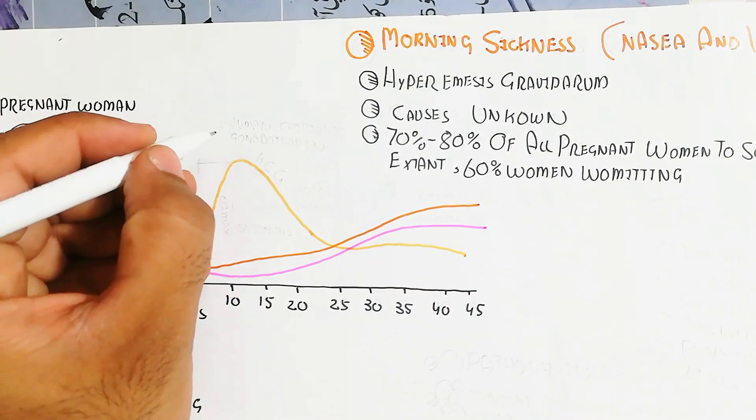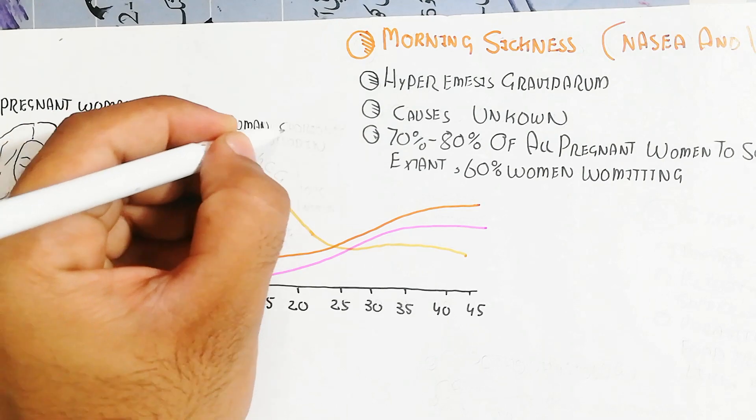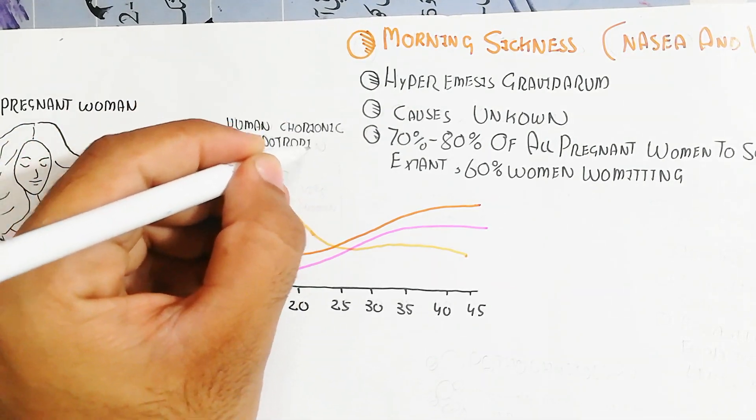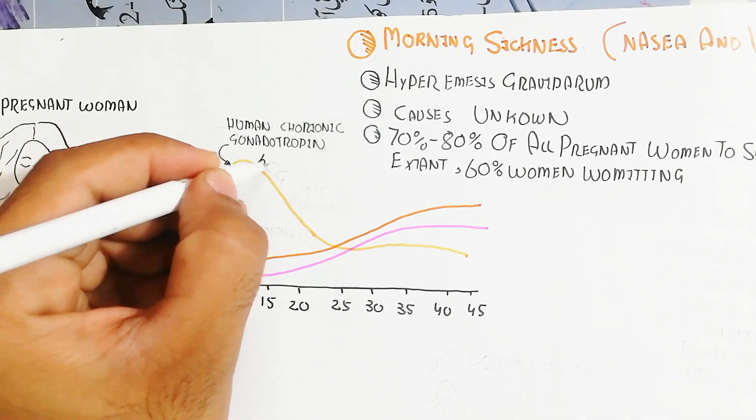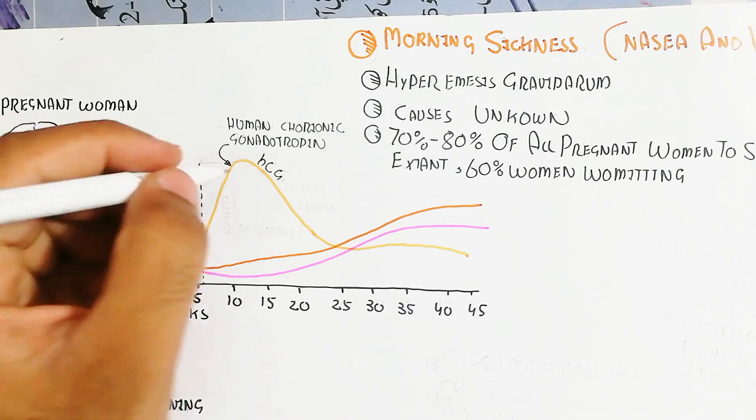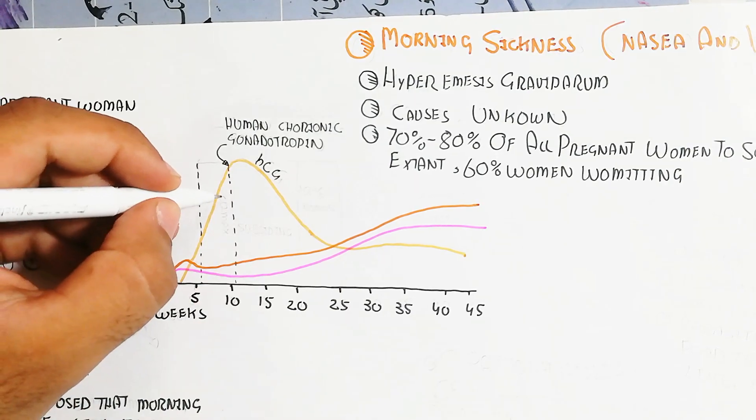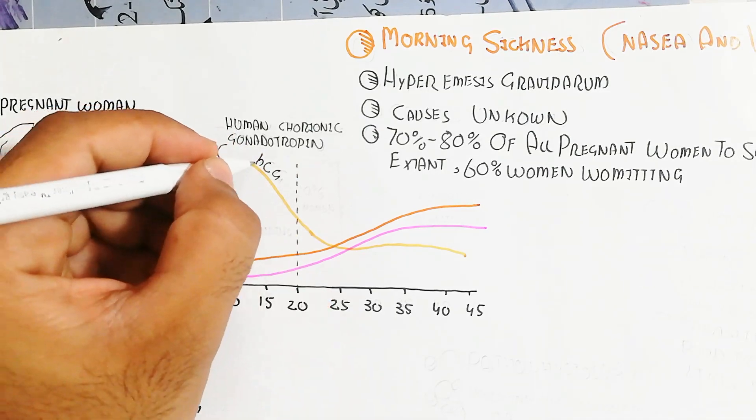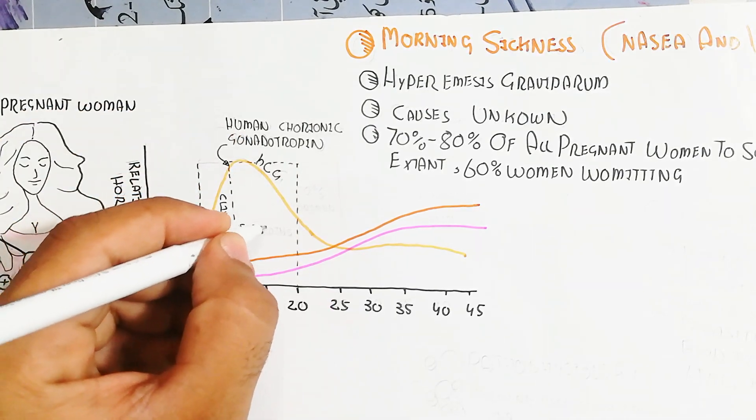This HCG will rise during 10 to 15 weeks of pregnancy and may cause morning sickness, because the fetus produces this hormone for defense mechanism against the eating of food and allergens. This is the climax time.